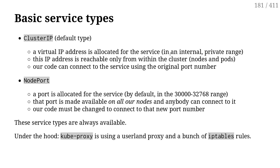The next type of service is NodePort. When I create a service of type NodePort, a ClusterIP is still allocated, but in addition to that, there is a port number allocated in a specific range. By default, that's between 30,000 and 32,768, and my service becomes reachable on all the nodes of the cluster on that specific port. For instance, let's say I create an Elasticsearch deployment and then expose it as a NodePort. Kubernetes is going to pick a port number for me — maybe 30,000-something — and then I can connect to that port on any node of the cluster, from inside or outside, and it's going to route the connection to my Elasticsearch deployment.